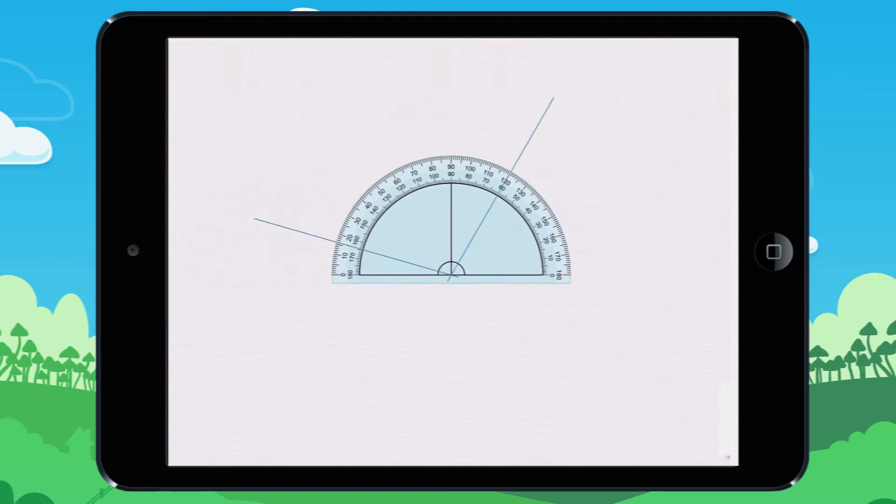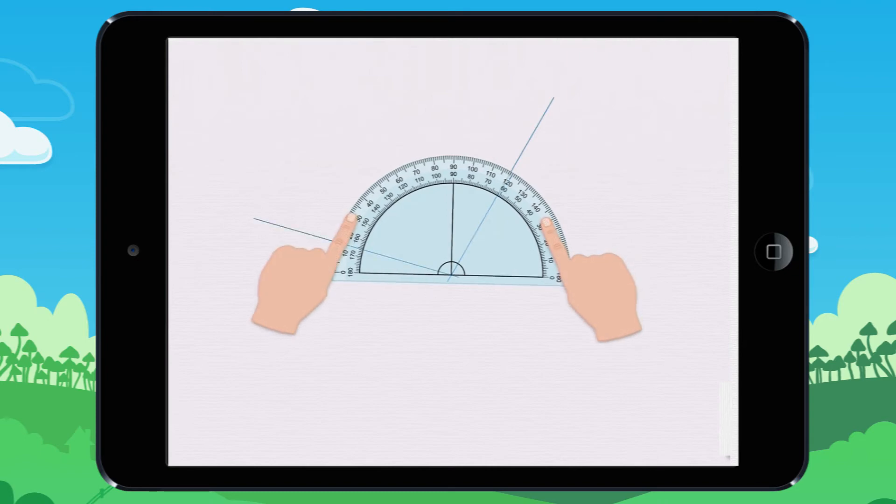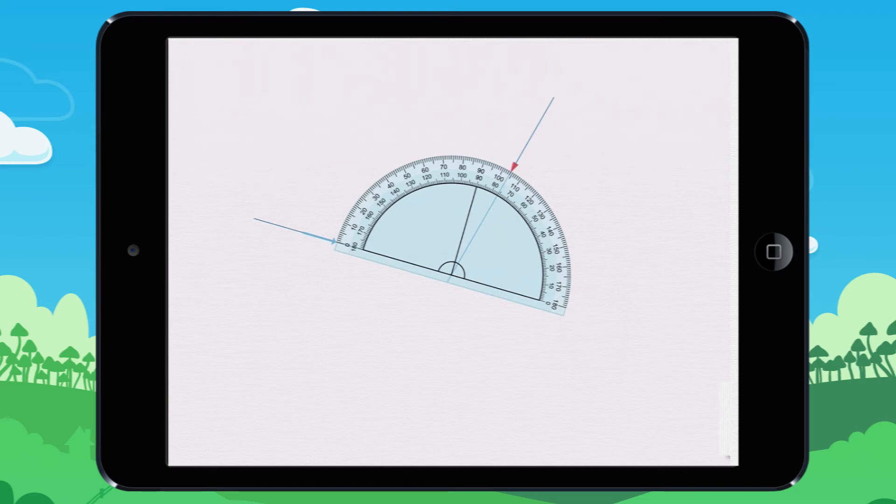Let me show you how to read the marks. Here we place the zero on the line, and we read the mark here. We see it is 104 degrees.